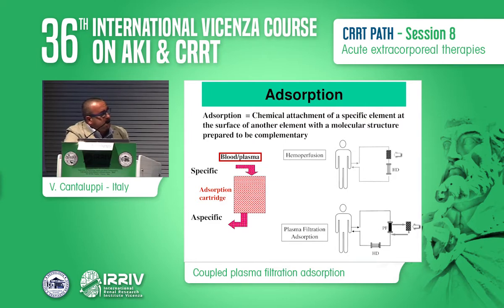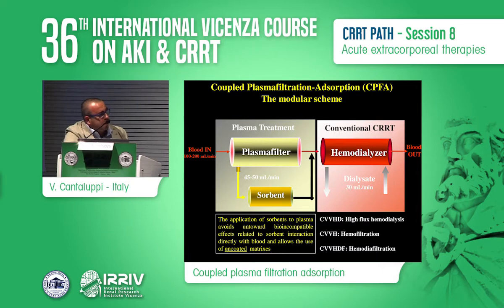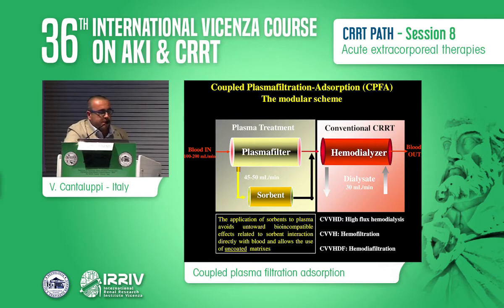Different techniques, mainly based on absorption, have been developed, such as hemoperfusion, but can also be run in series with standard renal replacement therapy models. Another way is plasma filtration absorption. Basically, we have a first plasma filter — plasma is filtered — and a sorbent cartridge from resin that can absorb several inflammatory mediators. Then we can use a conventional RRT in different modalities, diffusive or convective. One key point is that the application of sorbent to plasma may avoid some undesirable effects and increase biocompatibility, because we do not have direct contact of blood cells with the sorbent.